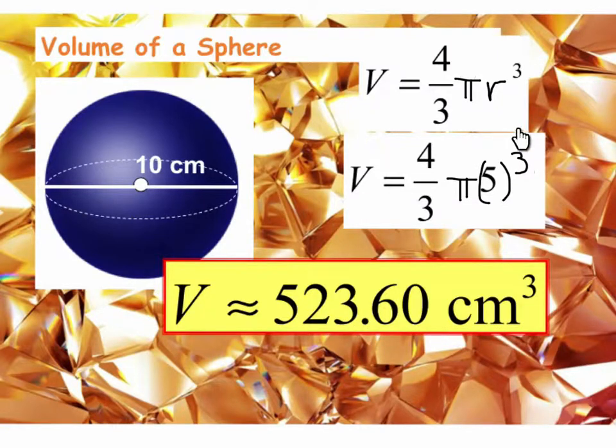Please practice doing this calculation on your calculator now. If you don't get 523.60 centimeters cubed, then you're doing something wrong and you need to try to figure out what your mistake is. So I'll explain again. You want to do five to the third first, then multiply that by pi, multiply that by four, and then divide everything by three.